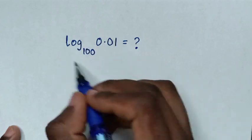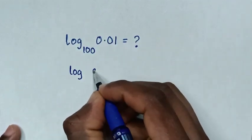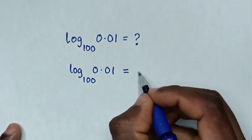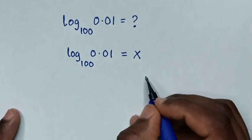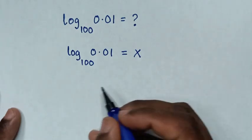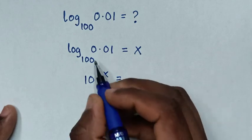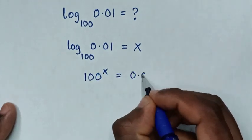So first we'll let this logarithm as x, then it will be log of 0.01 base of 100 is equal to x, then into exponents it will be 100 power of x is equal to this 0.01.